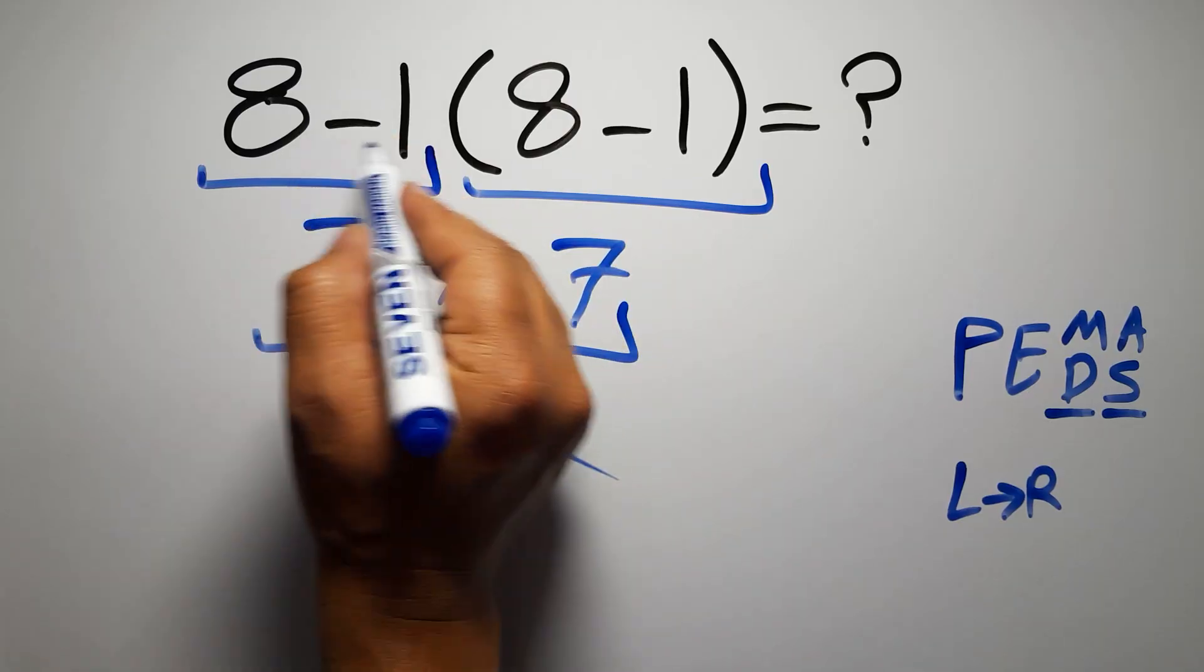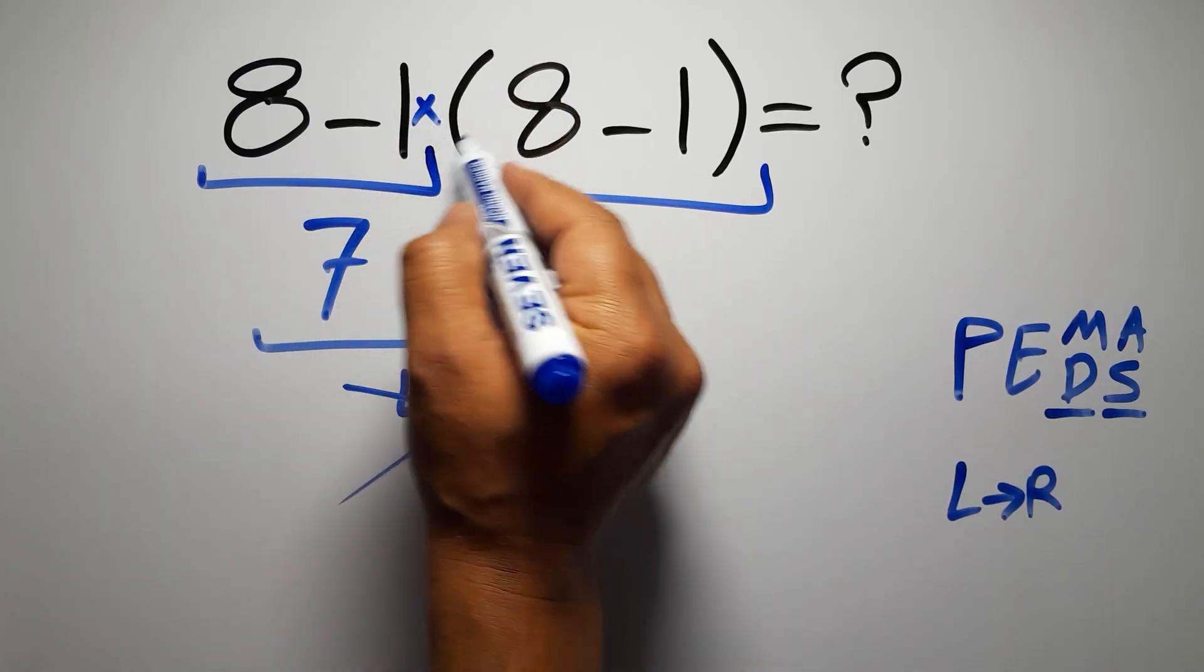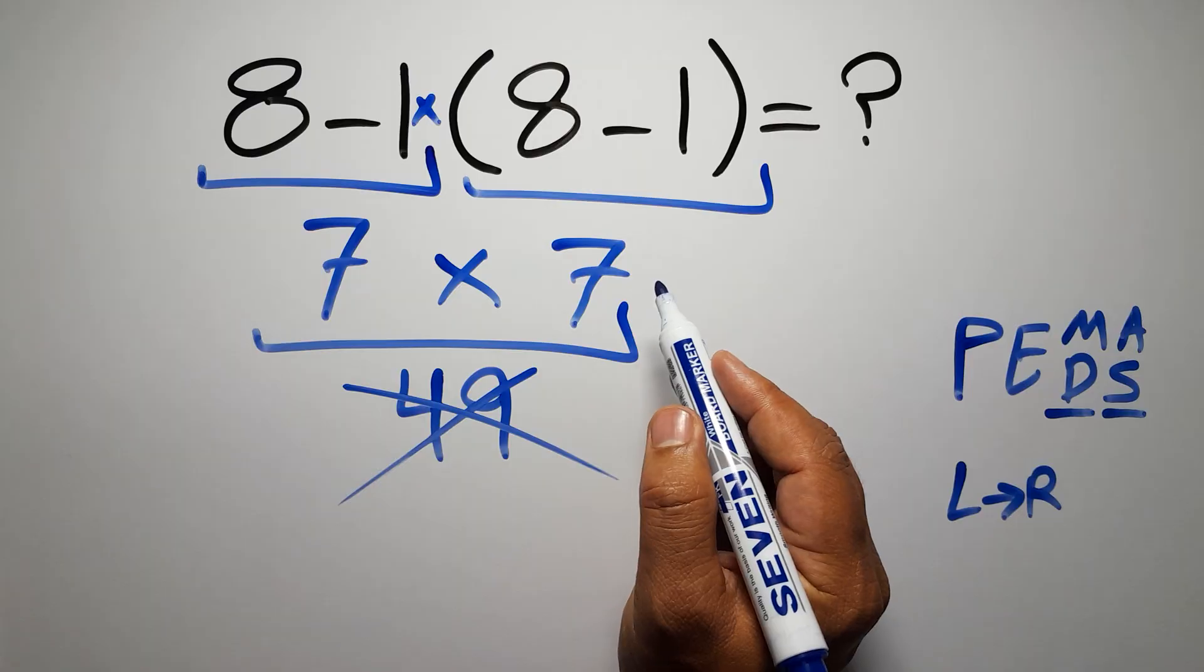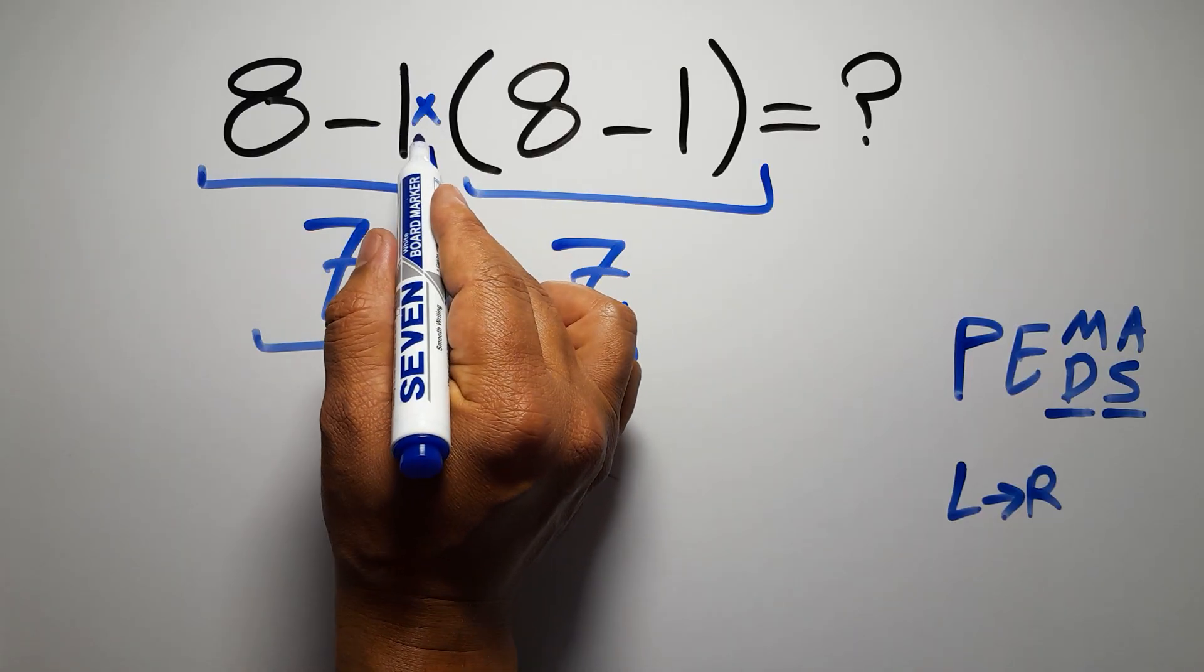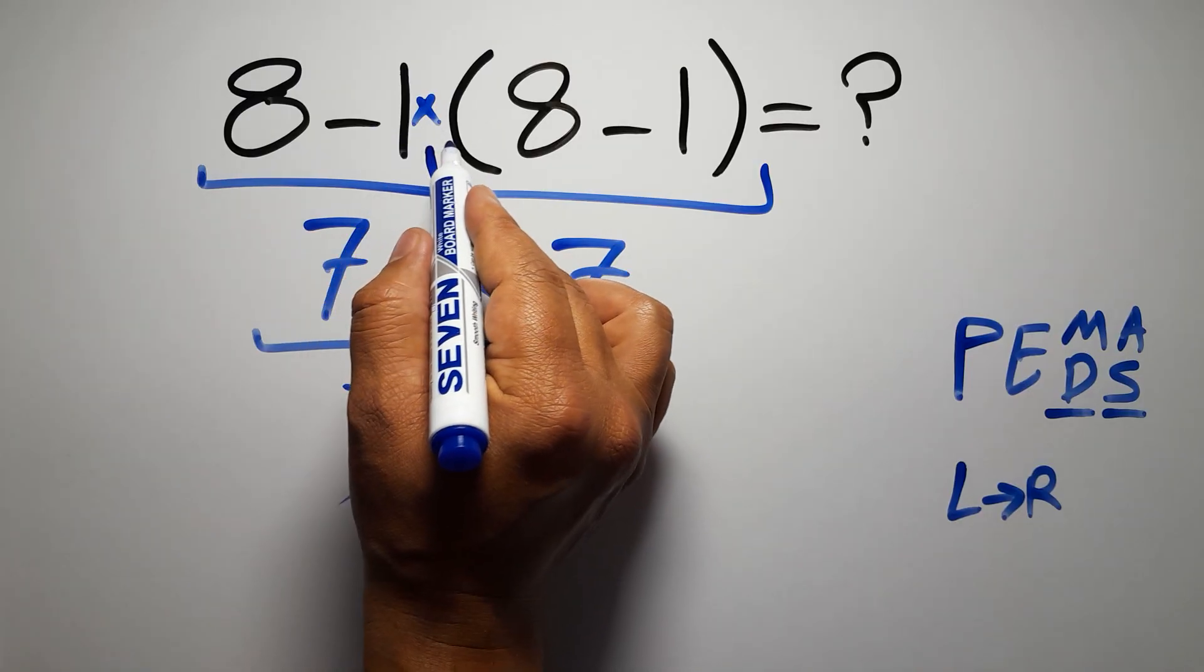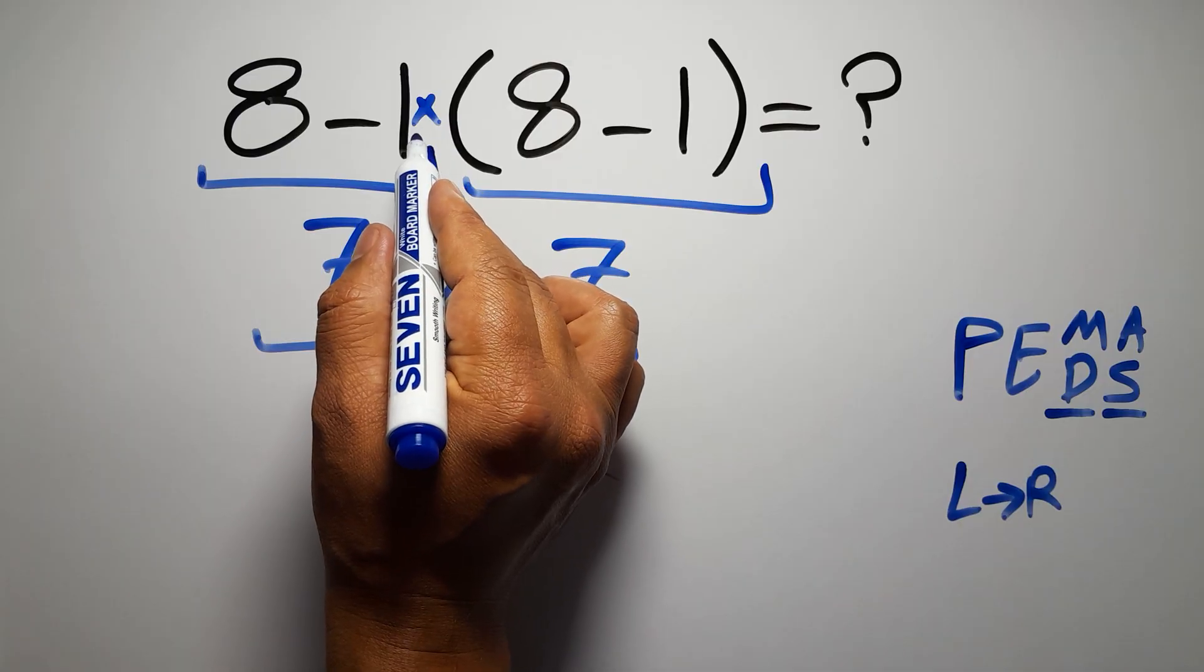In this expression we have one subtraction, one multiplication, and one set of parentheses. Inside these parentheses we have one subtraction. Here we have a multiplication because in mathematics, when a number is placed next to parentheses, it means multiplication and we usually don't write the multiplication sign for brevity.